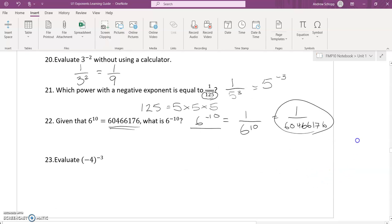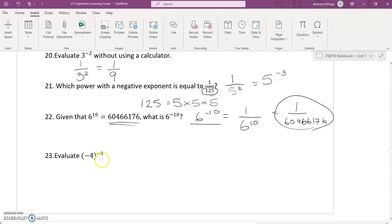For question 23, we're asked to evaluate (-4)^-3. So the base here is negative 4. I'm going to rewrite this as 1 over negative 4. The base stays the same. The exponent changes sign. It becomes a positive 3. So it's 1 over (-4)^3.